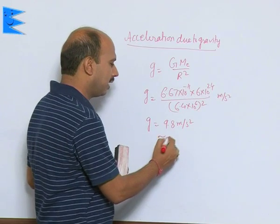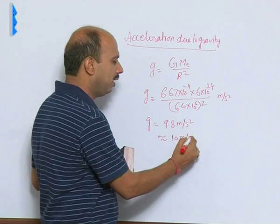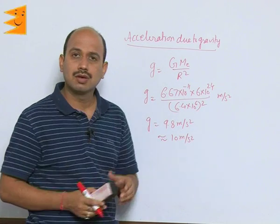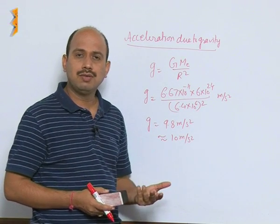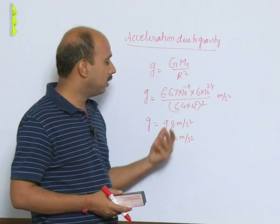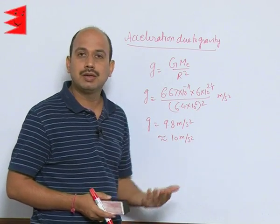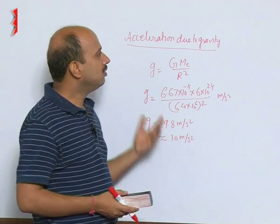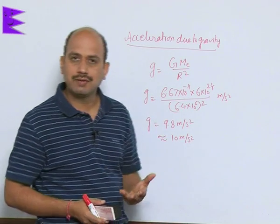Sometimes in numericals, we can use 10 meter per second square depending on our convenience. As the numerical values are given, we can go according to that. Otherwise, if nothing is given in a question about g, you have to take 9.8 meter per second square. So this is the concept about acceleration due to gravity.